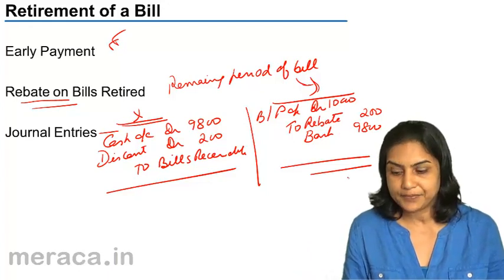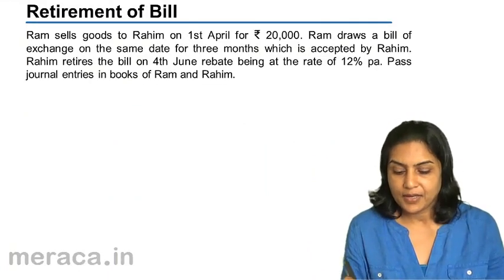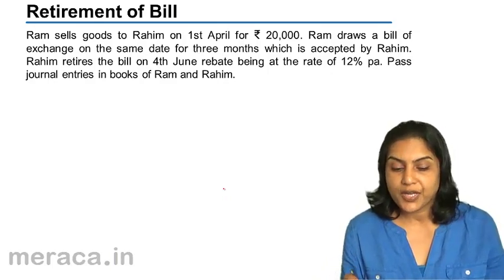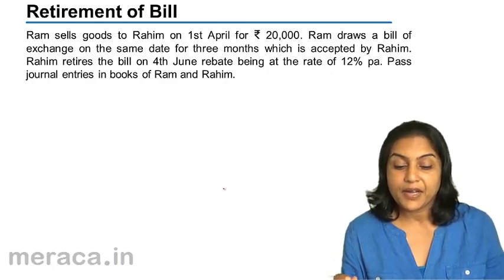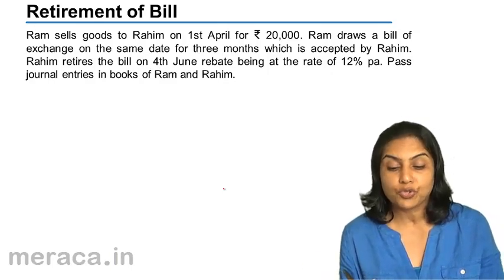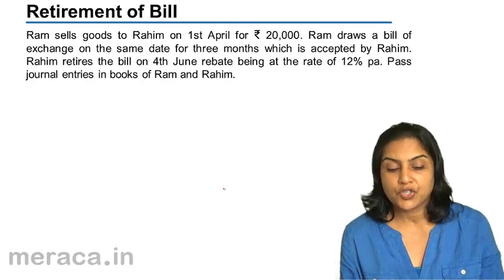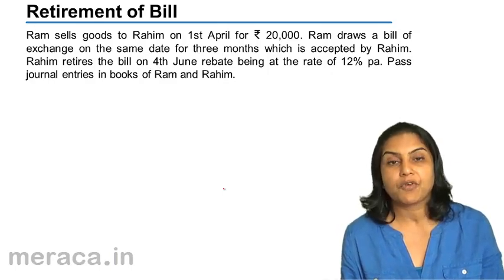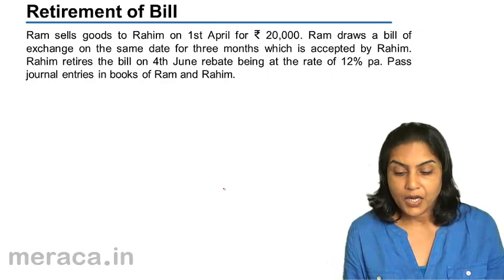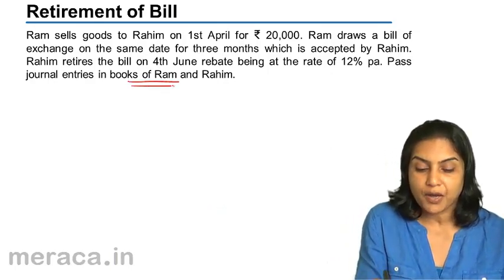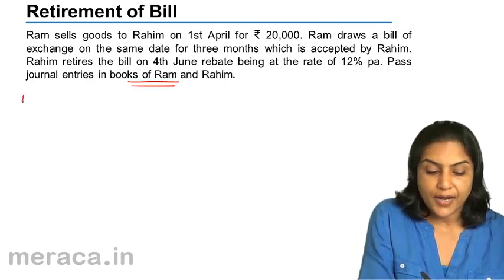A small example: Ram sells goods to Rahim on 1st April for 20,000 and draws a bill on the same date for three months, accepted by Rahim. But Rahim retires the bill on 4th June, rebate being at the rate of 12 percent per annum. Pass journal entries in the books of both Ram and Rahim.